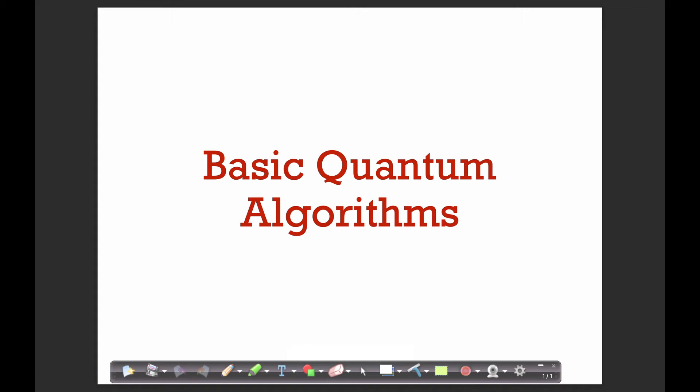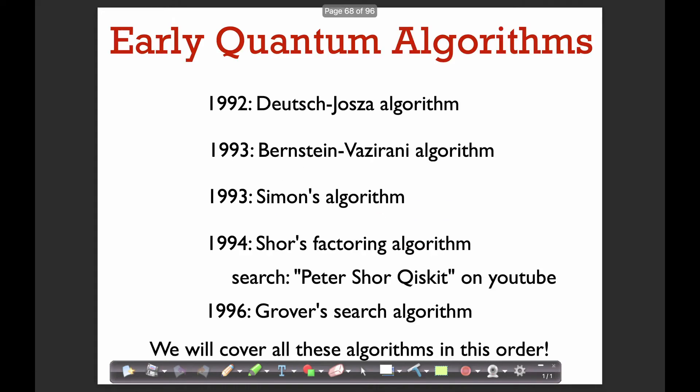Now let's actually start talking about some quantum algorithms. Here's a chronology of some of the early quantum algorithms, and we're going to cover these algorithms in this exact order in this class. The way these algorithms were developed is a really nice progression of ideas. In particular, Deutsch-Jozsa, Bernstein-Vazirani, and Simon's algorithm all kind of use the same framework.